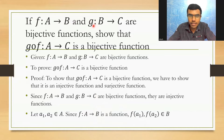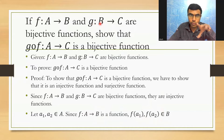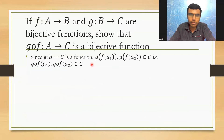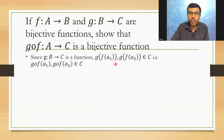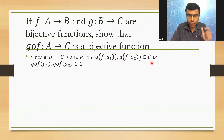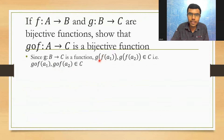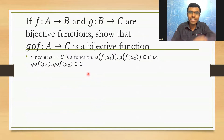Since g:B→C is a function and f(a1), f(a2) belong to B, these are inputs for g. Since g maps B to C, g(f(a1)) and g(f(a2)) belong to C. That is, g∘f(a1) and g∘f(a2) belong to C, since g(f(a1)) can be written as g∘f(a1).